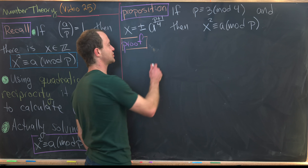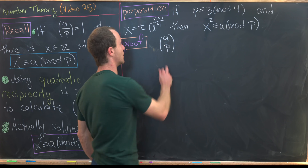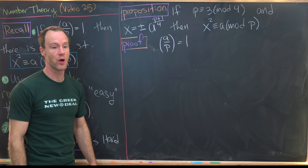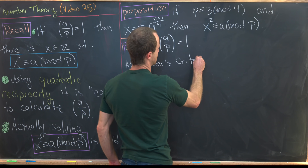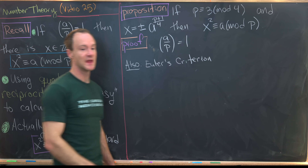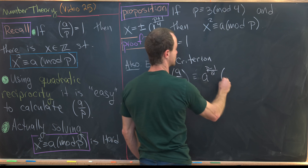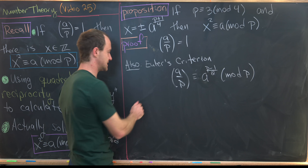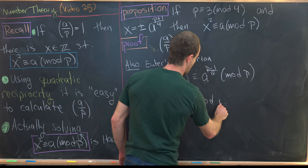We start with the assumption that a is a quadratic residue, otherwise we can't get off the ground. So (a/p) = 1. By Euler's criterion, which we proved in a previous video, we know (a/p) ≡ a^((p−1)/2) mod p. Putting this together, a^((p−1)/2) ≡ 1 mod p.